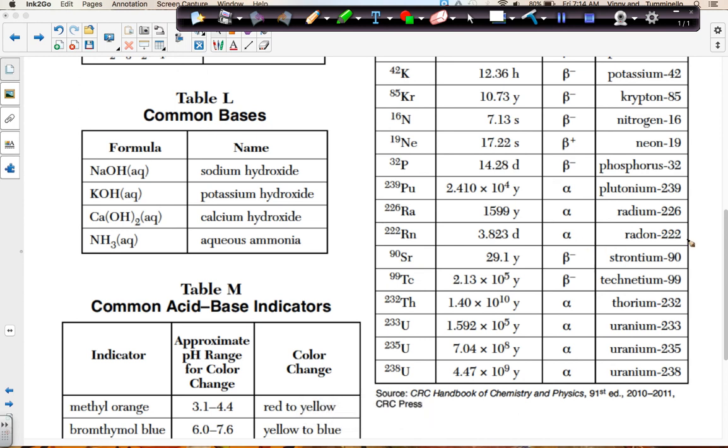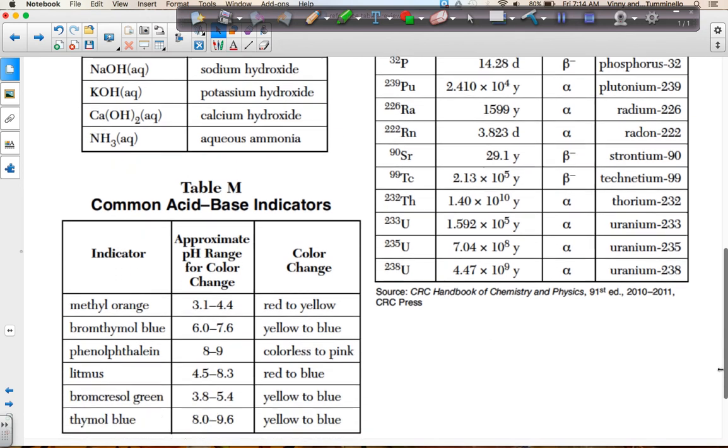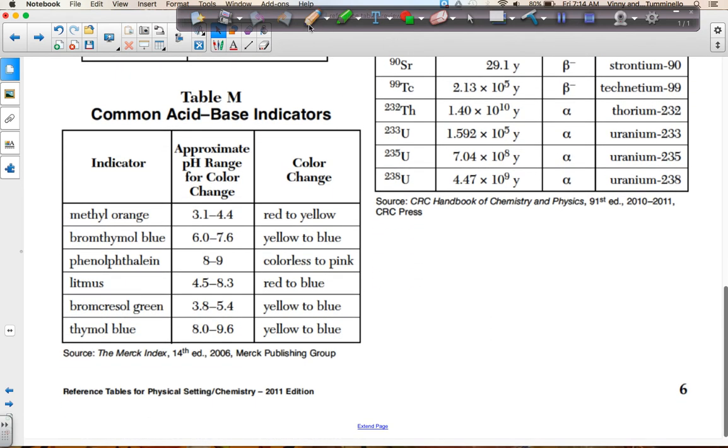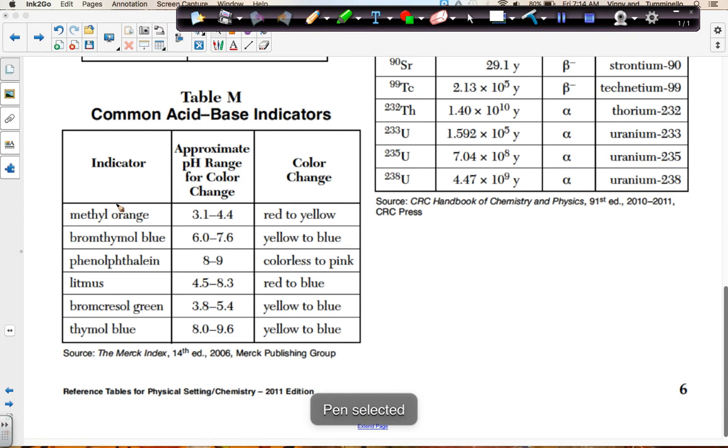And the last chart that we're going to do right now is table M, which is the common acid base indicators. And remember these indicators, the colors that we see over on the side. The first color is what we see before the first pH. The second color is what we see after the higher pH. And the combo color is what we see in the middle. So at the middle range for methyl orange, you'll see orange. For the beginning, before 3.1, you'll see red. After 4.4, you will see yellow.